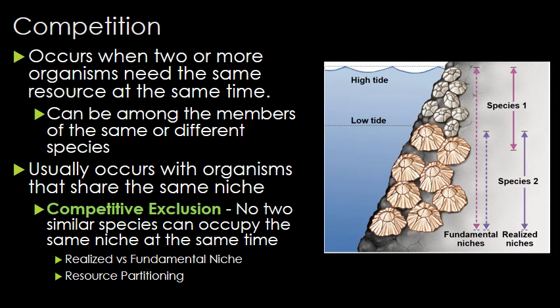Competition is probably the most commonly thought of type of species interaction. Two species or individuals within a species fighting for a resource usually occurs if an organism is sharing the same niche. Competition is common — it drives evolution, it drives survival — but two species with identical ecological niches cannot coexist in the same habitat. Competition usually results in a decrease in the population of the less adapted species.